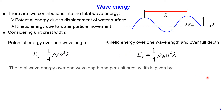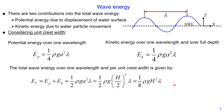Therefore, the total wave energy over one wavelength and per unit crest width is given as potential energy plus kinetic energy. Adding them together gives 1/2 multiplied by specific weight, multiplied by amplitude squared, multiplied by wavelength.